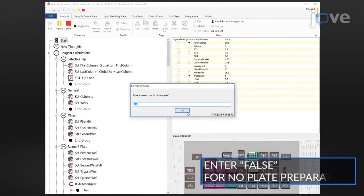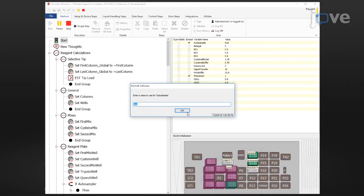Enter True into the Enter a value to use for auto-sampler prompt to have an auto-sampler plate prepared at the end of the method, and click OK.